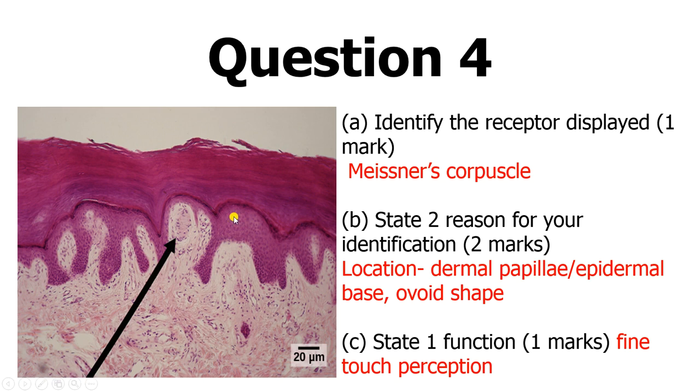So this is part of neurohistology and this is the Meissner's corpuscles. So here we are talking about sensory receptors for general sensation. Remember there are sensory receptors for special sensation like the retina, the organ of Corti, or your circumvallate papilla. But these are sensory receptors for general sensations, specifically fine touch.